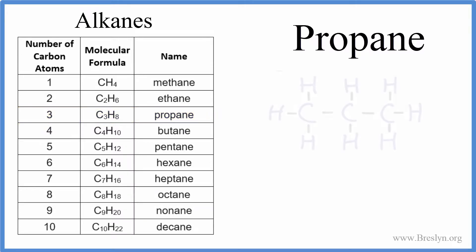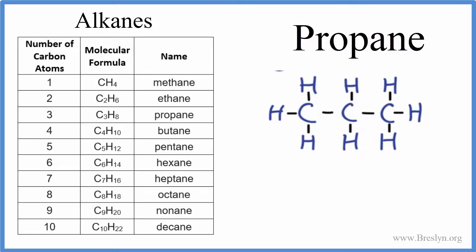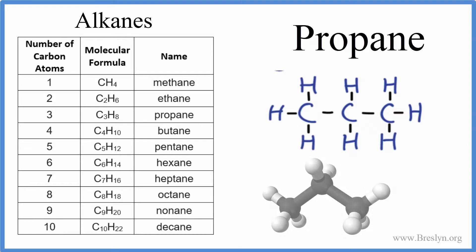We could write the structure for propane, and that would look like this. We'd have three carbons, and around them, with single bonds, we'd have hydrogens. This is propane, which is an alkane. You can see that the structure here — the molecular geometry — is a little different than our drawing. It has this bend here, and with respect to each one of these carbons, it's a tetrahedral molecular geometry. So that's the structure for propane.